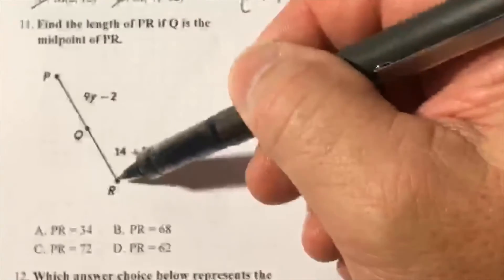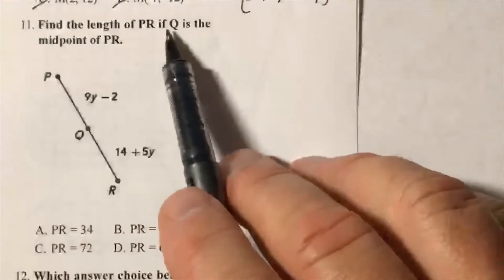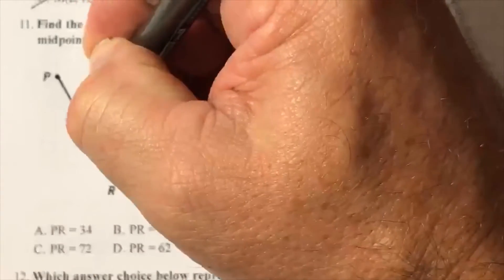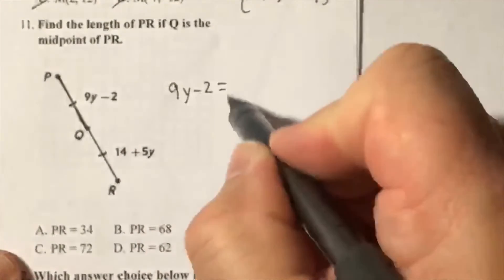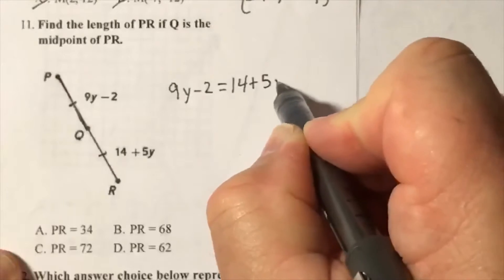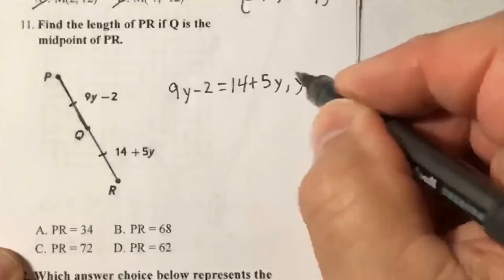Let's find the length of PR. Locate PR. It says if Q is the midpoint, that means from P to Q, this piece is equal to this piece. So my equation is 9y minus 2 equals 14 plus 5y.